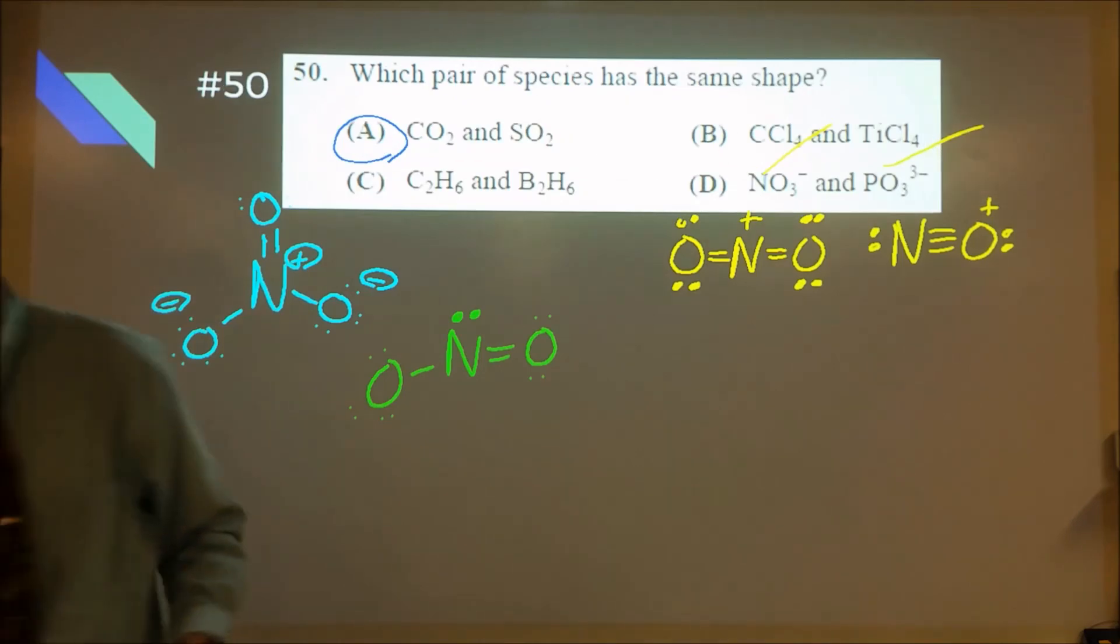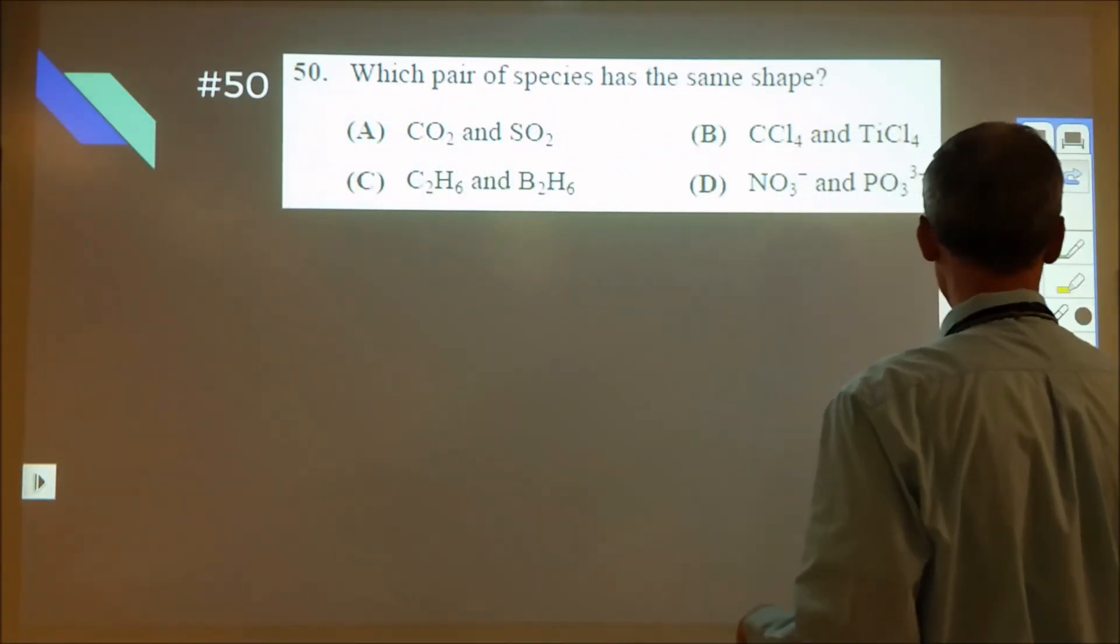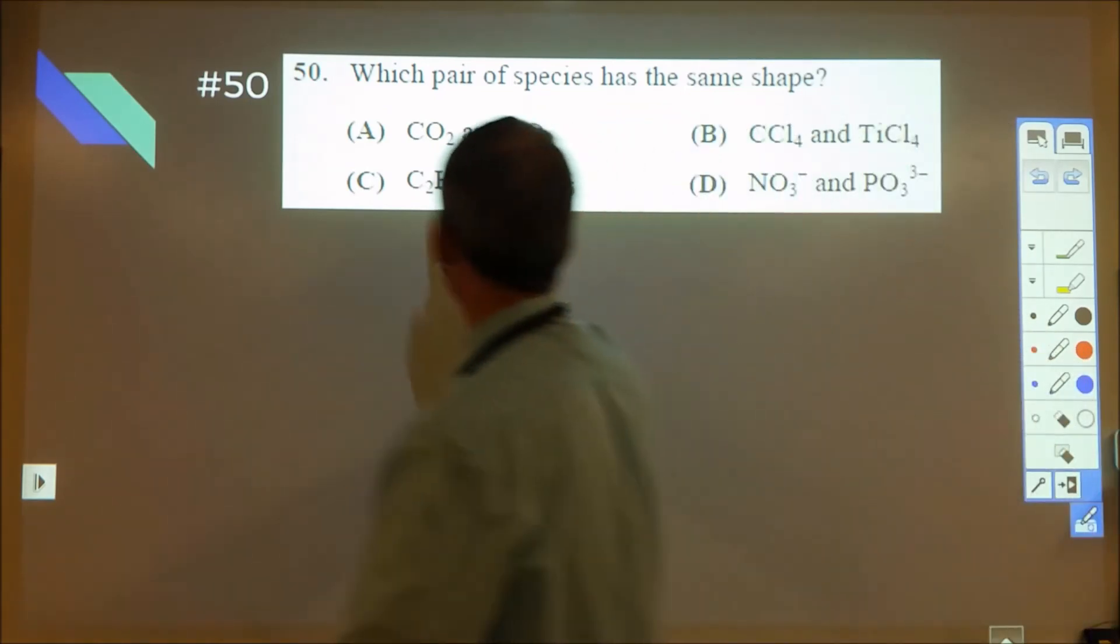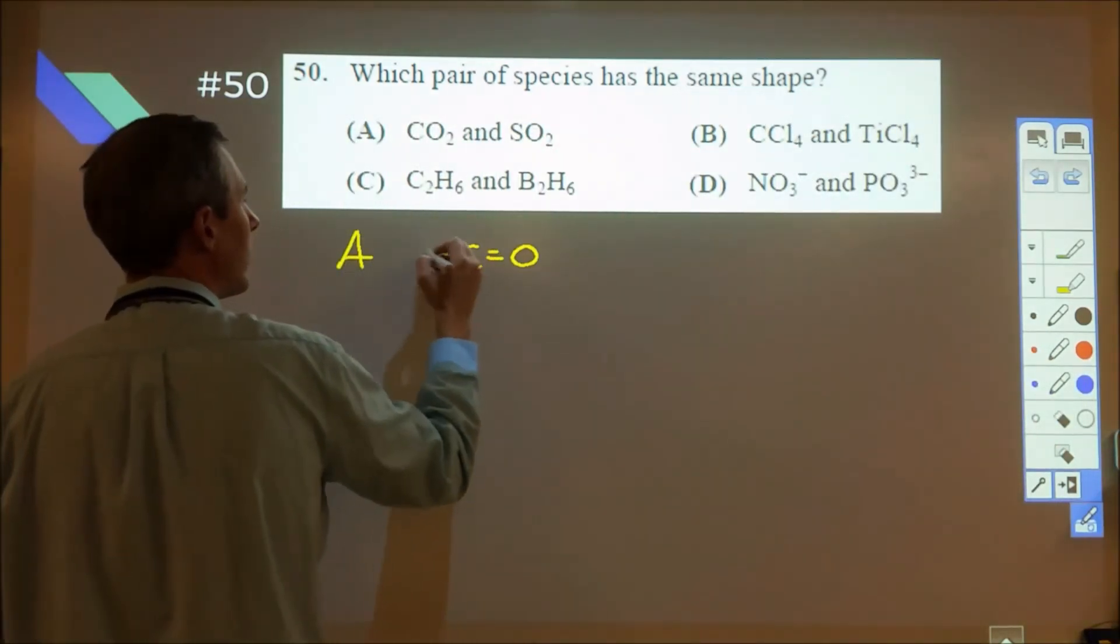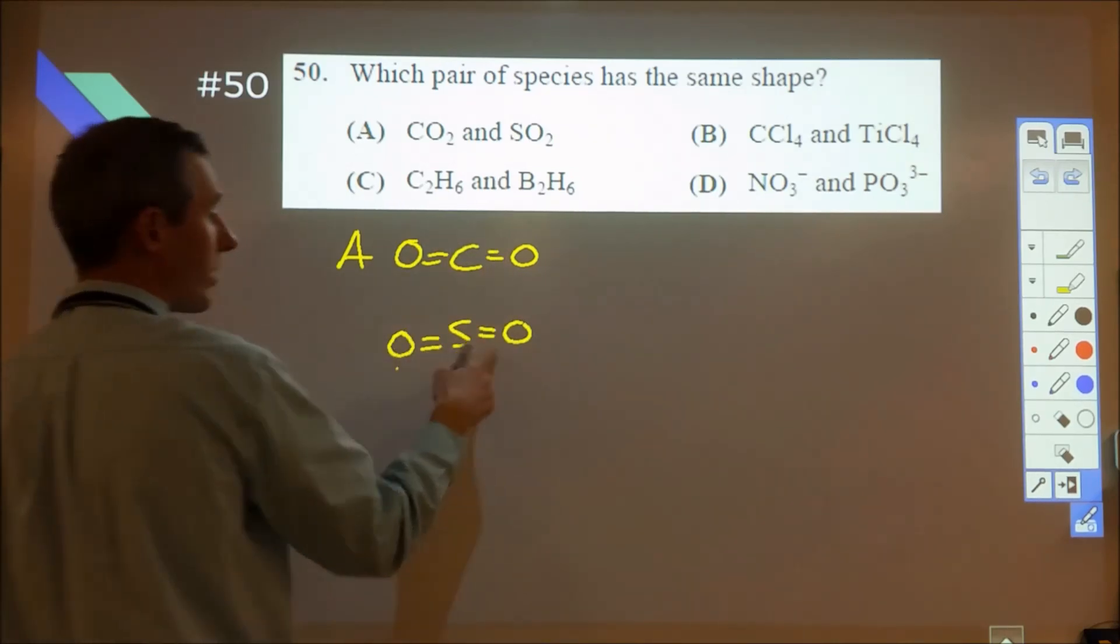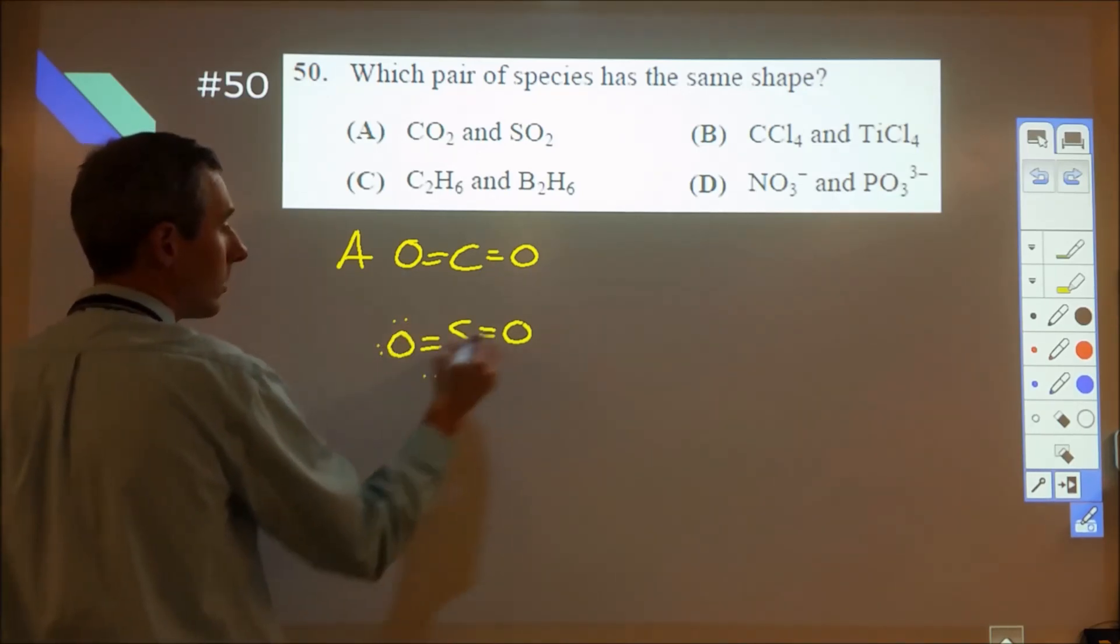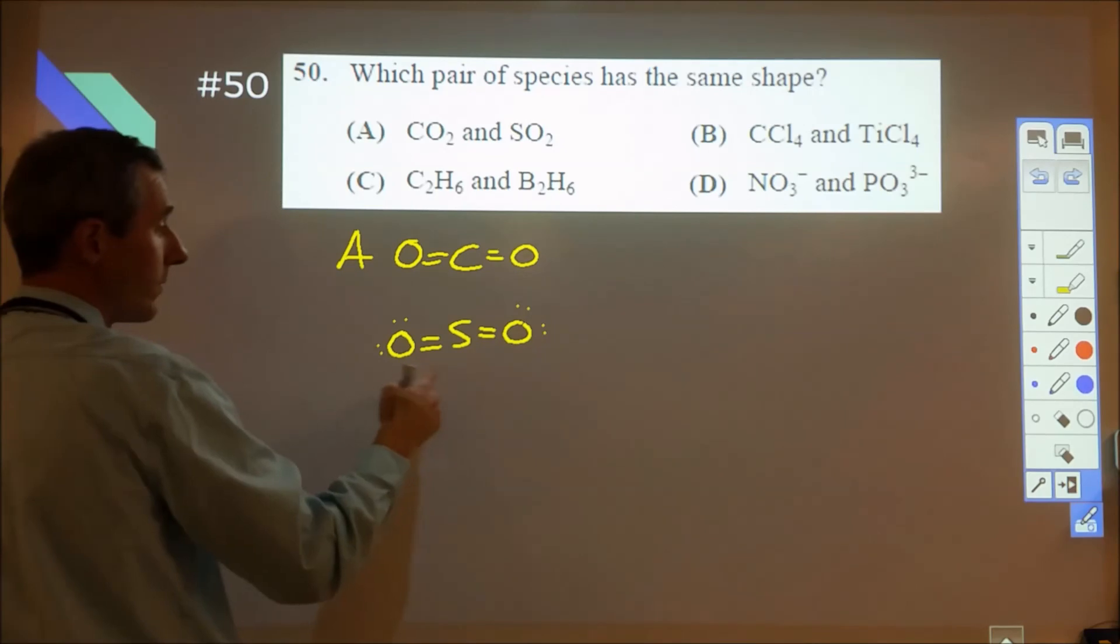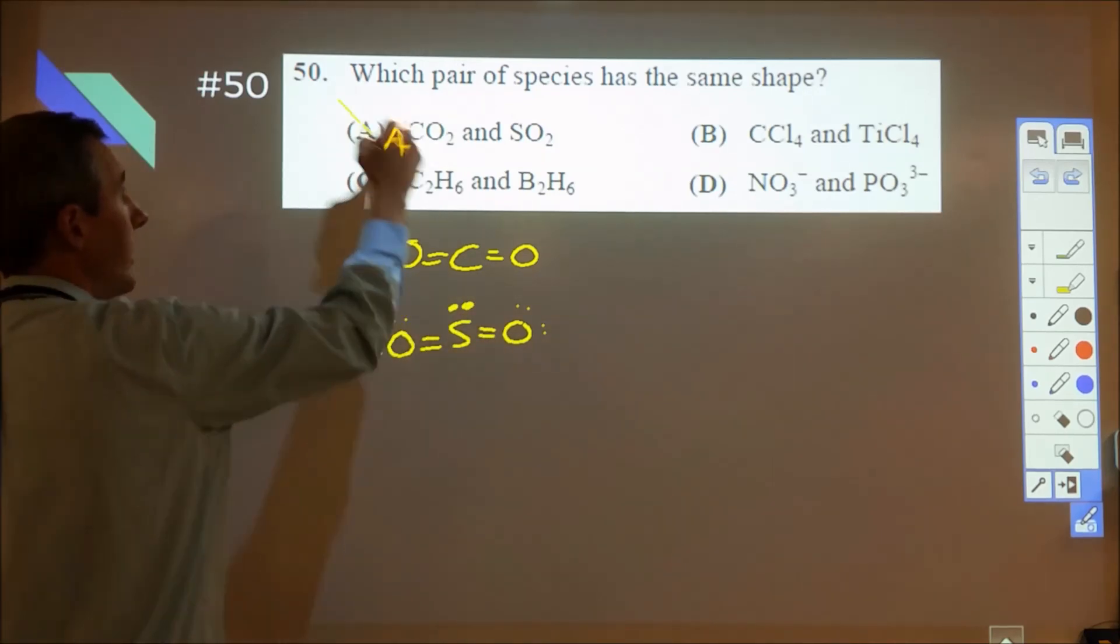And the last one, which pair of species have the same shape? So CO2 is a linear molecule. SO2 is not linear. A really simple way to kind of work that is to start with this and then kind of count up the formal charge here. So we need a total formal charge of zero. We've got zero on both oxygens. We need zero on the sulfur, one, two, three, four. We need two electrons there. That's going to be a bent shape. Therefore, A is incorrect.